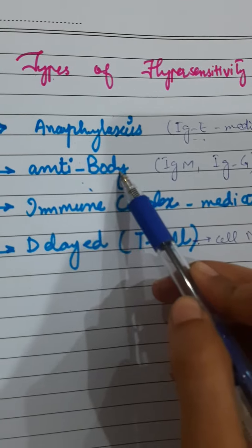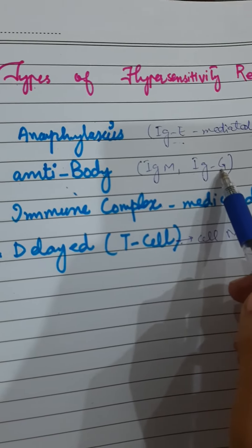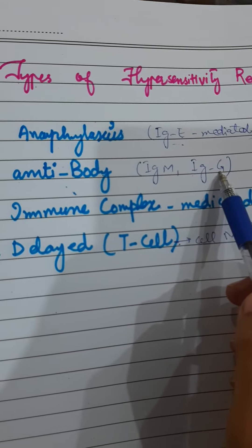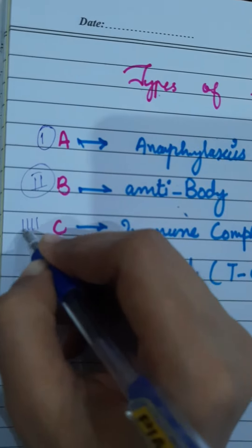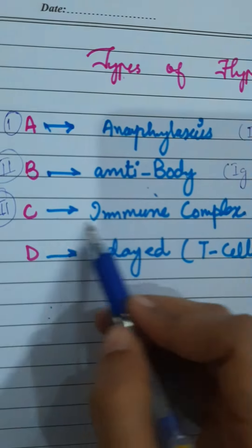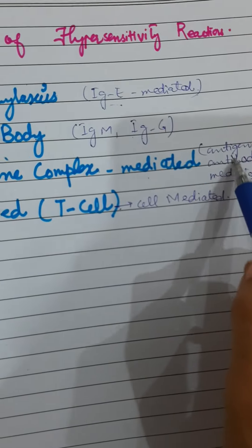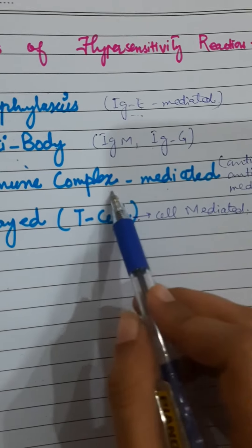It usually occurs in vasculitis and pemphigus vulgaris. Type 3 sensitivity reaction, which is complex immune complex mediated, occurs in the antigen antibody mediated reactions like serum sickness and polyarteritis nodosa.